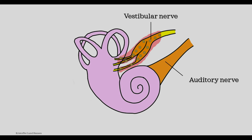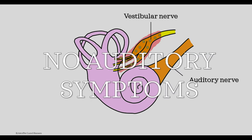Notice that the vestibular but not the auditory nerve is affected. Since the auditory nerve is not affected, there will be no auditory symptoms — no hearing loss, no tinnitus (which is when you hear a ringing noise that's not actually there), or anything else related to hearing. If the patient has dizziness and also presents with auditory symptoms that came on very suddenly, vestibular neuritis is unlikely.